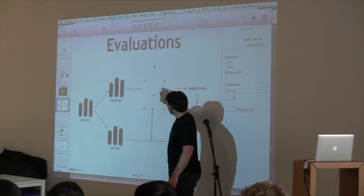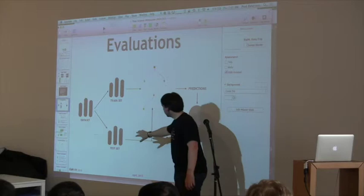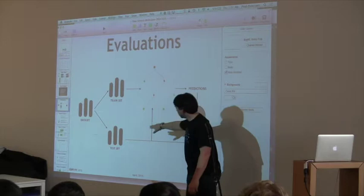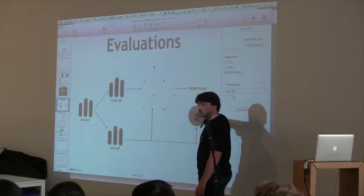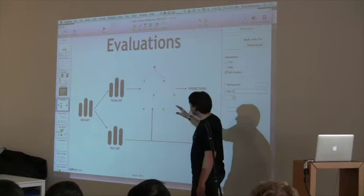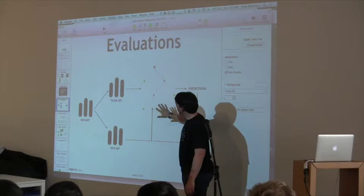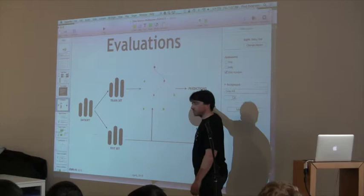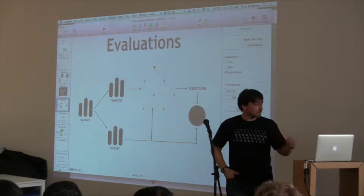We then use the test set and run it through the model to create predictions. The test set has labeled data with known values, so we can compare predictions against actuals to see how well we're doing. This is statistical, so results might be slightly different each time you run it, but in general this is a pretty safe way to judge how well the model is doing.